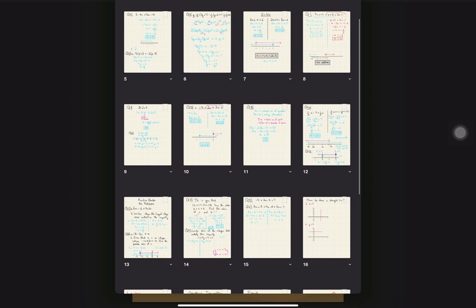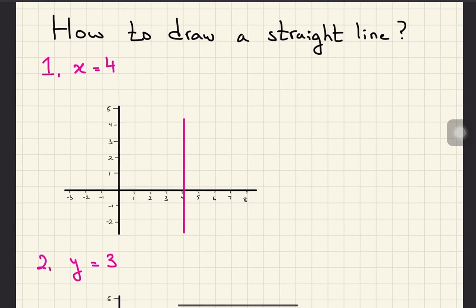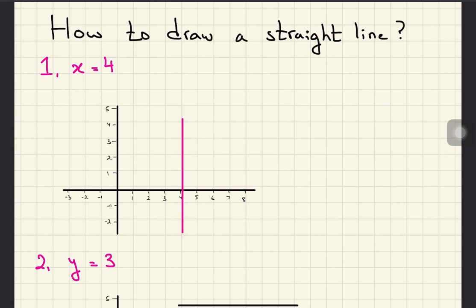The first straight line we need to draw is x equals to 4. We consider the x-axis, look at the value 4 on it, and simply draw a straight vertical line there — this is called x equals to 4. For example, if you have x equals to 7, you just look at 7 on the x-axis and draw a straight line there.